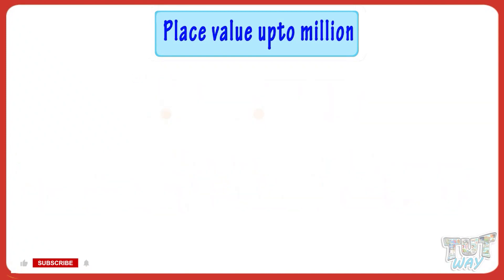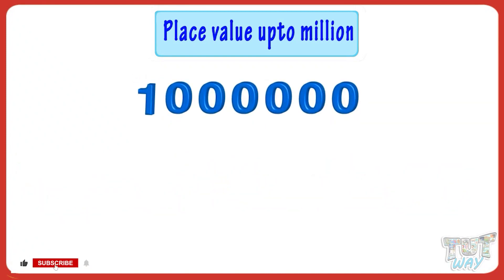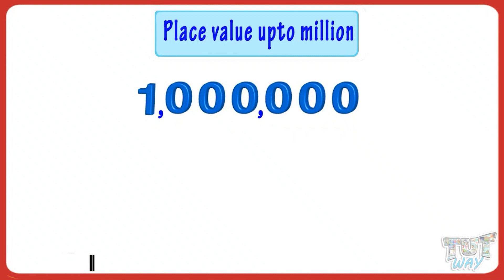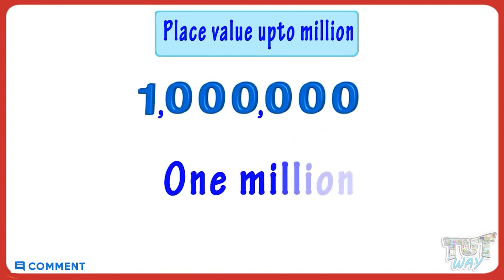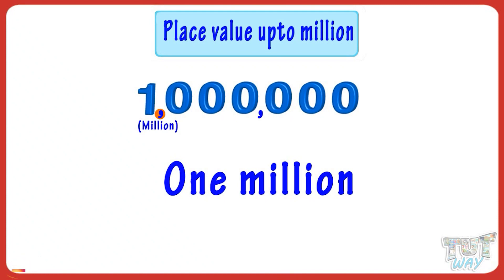Let's take another example. Here we have a number. Put in commas after every three digits from the right. Now we will read it like one million, as the name of the second comma from the right is million. The name of the first comma is thousand, but there are no digits to read there — only zeros. So the number is one million.